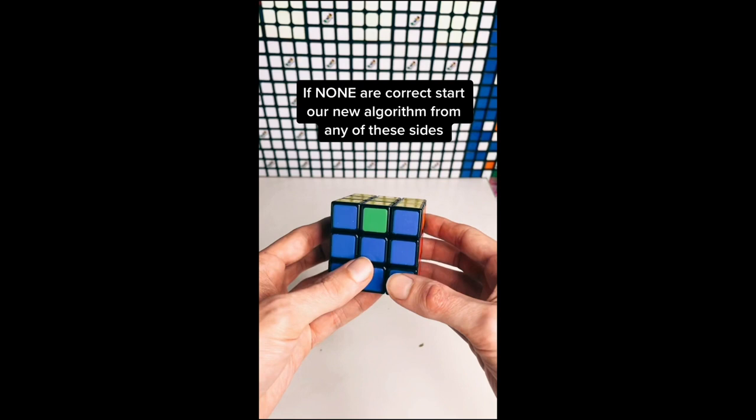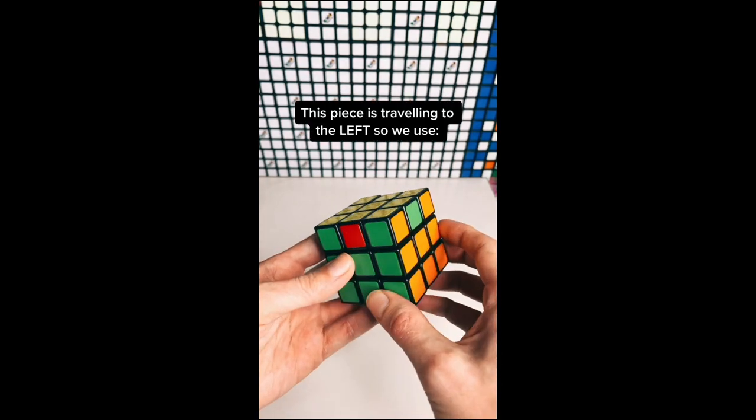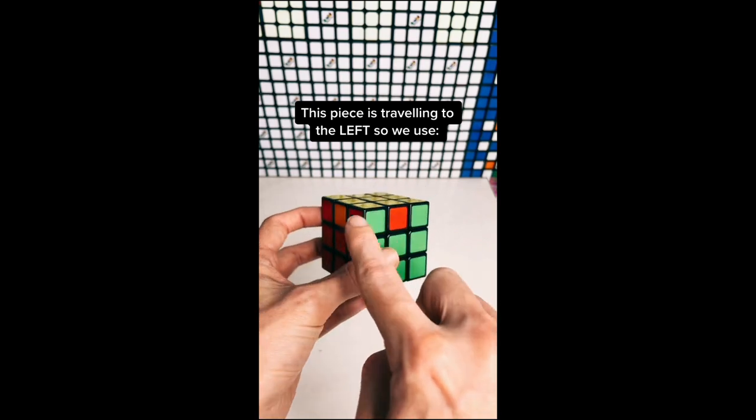If none are correct, start our new algorithm from any of these sides. This piece is traveling to the left, so we use: